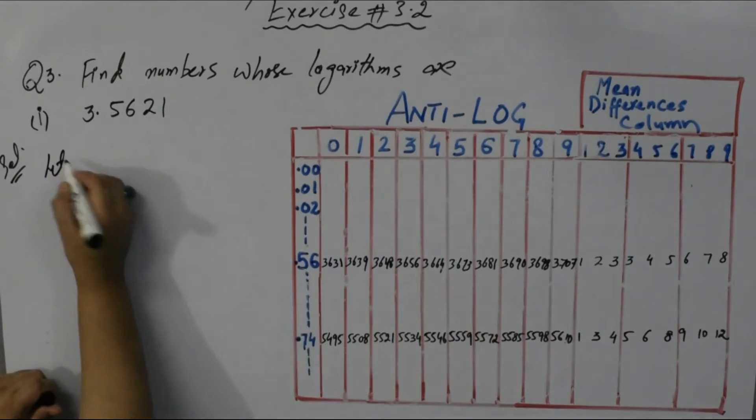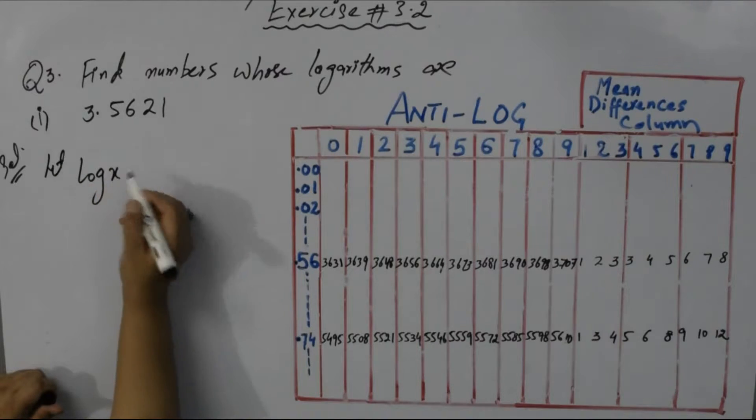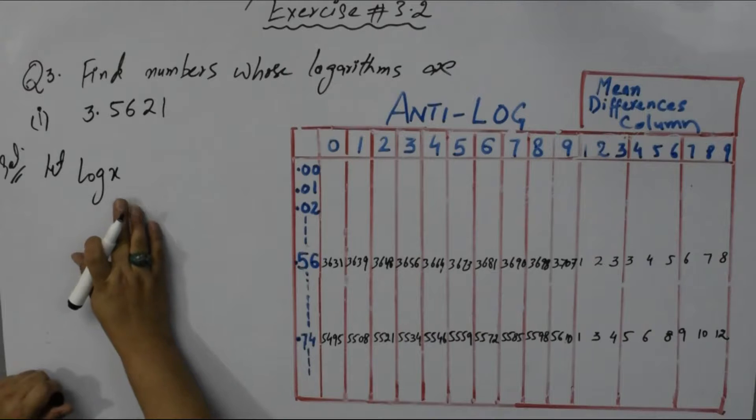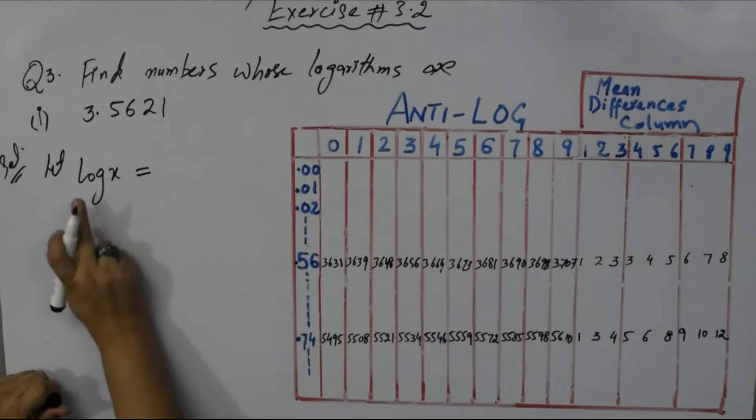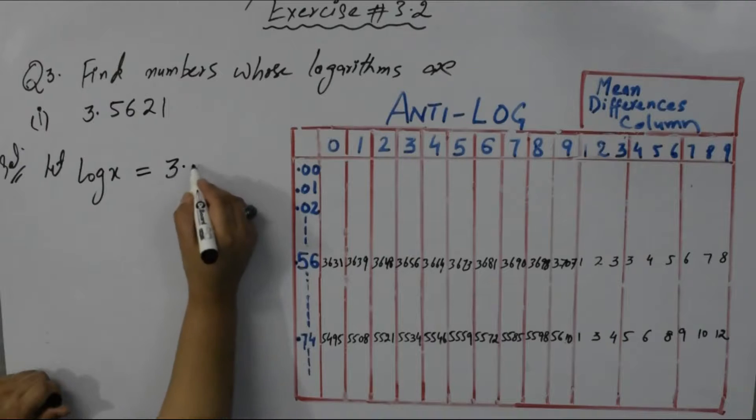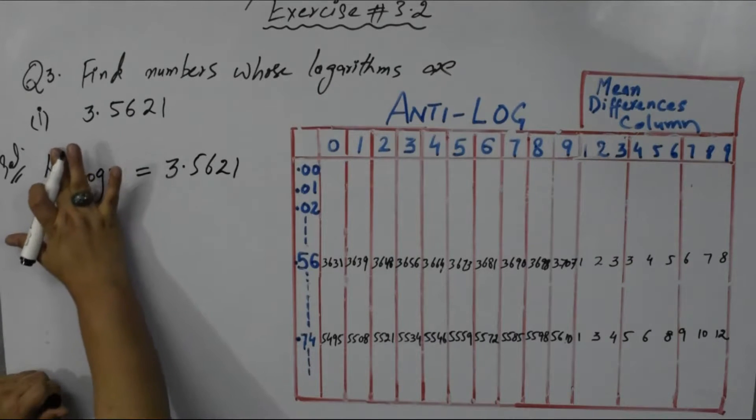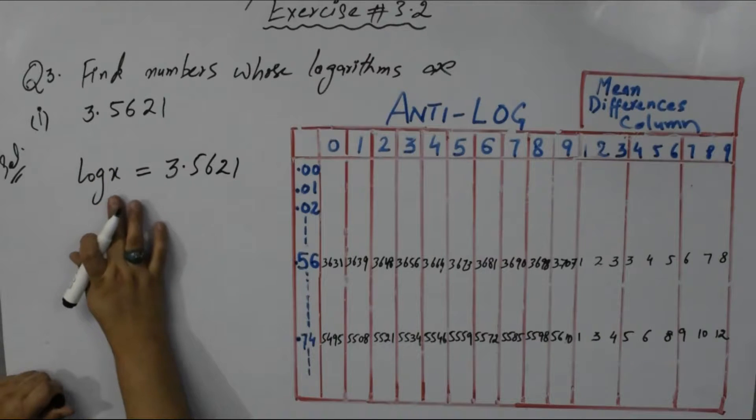Let's suppose log x is the number we need to find. Let log of x equals 3.5621. They have given that log of unknown number is this one, you have to find this unknown number.